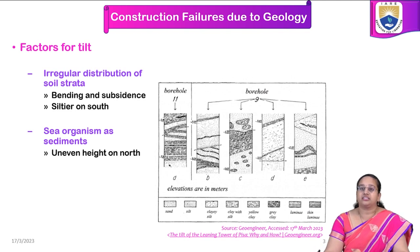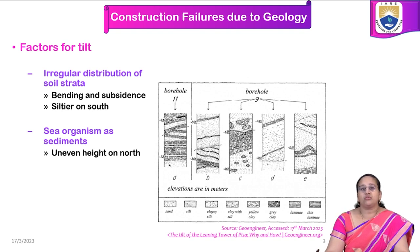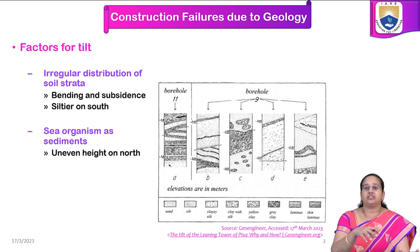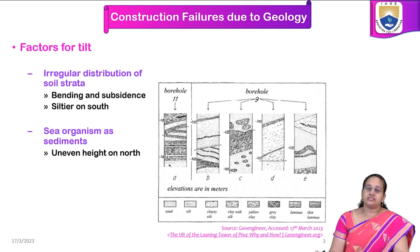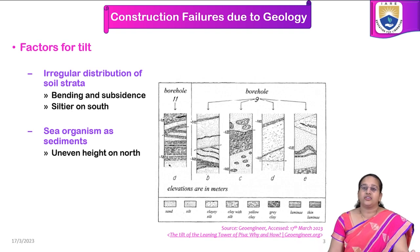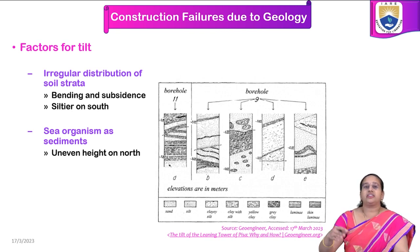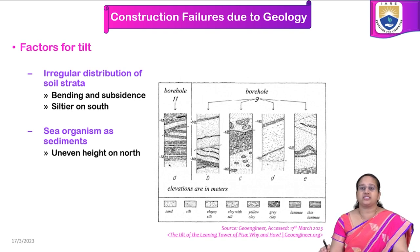Coming to another factor: the irregular distribution of soil strata. This is understood by making boreholes throughout the site. There are some 11 boreholes made near and across the construction area. What is understood is that the soil strata is very irregular — bending and subsidence of soil strata is observed at various locations. That means the same silt is found at different heights and with irregular boundaries. This irregular distribution of soil strata causes different levels of consolidation and different levels of settlement at different locations.